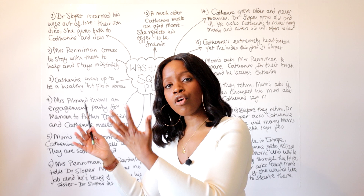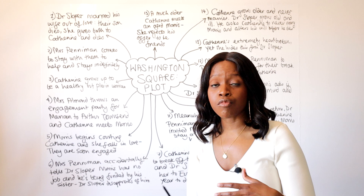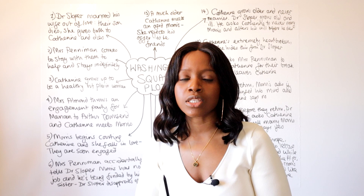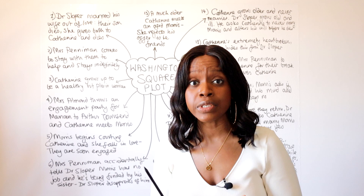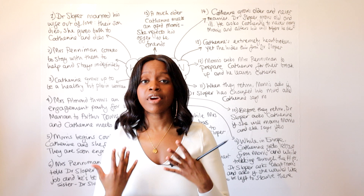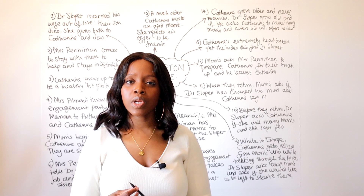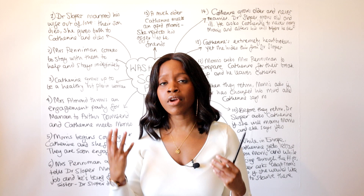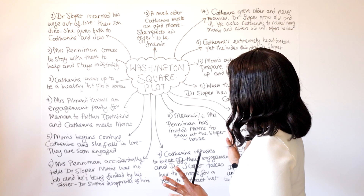Dr. Sloper dies and Katherine is left to live off only her mother's inheritance. A much older Katherine, who has accepted being single for the rest of her life, is then approached by an aged Morris through Mrs. Peniman, who tries to arrange a reunion. Katherine initially refuses but then agrees to meet him. When she does, she rejects his offer to rekindle even a friendship and embraces her solitude. It is a deeply tragic ending for a woman who genuinely loved Morris and tried to exercise duty towards her father, only to be taken advantage of by both men in her life.